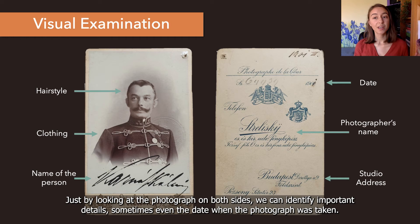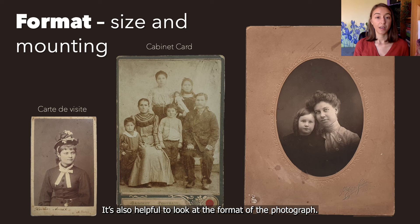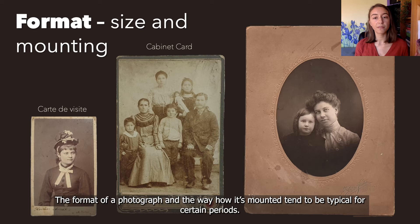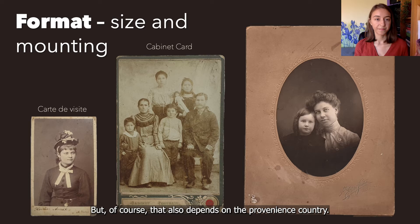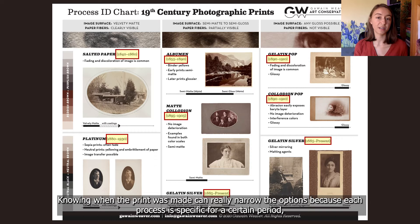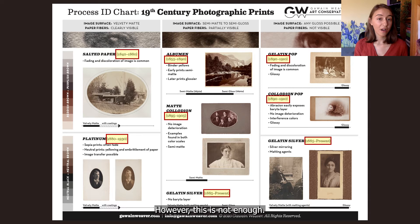The first step would be a thorough visual examination. Just by looking at the photograph on both sides we can identify important details, and sometimes even the date when the photograph was taken. It's also helpful to look at the format of the photograph — is it a carte de visite or a cabinet card? Maybe it's mounted or not? The format of the photograph and the way it is mounted tend to be typical for certain periods, though that also depends on the country of provenance. Knowing when the print was made can really narrow the options, because each process is specific to a certain period, as you can already see on the chart.